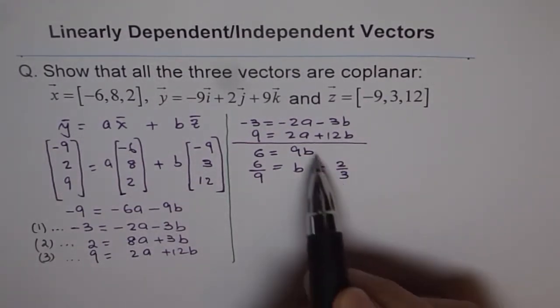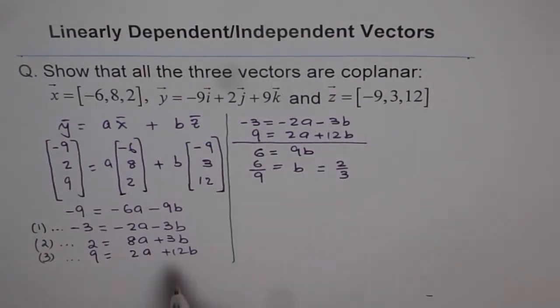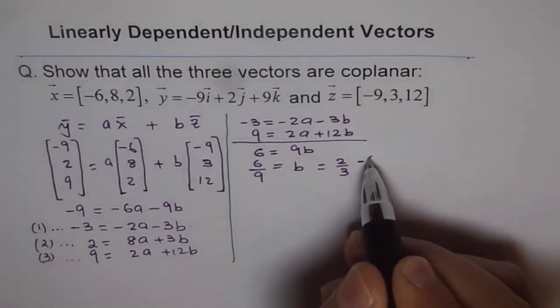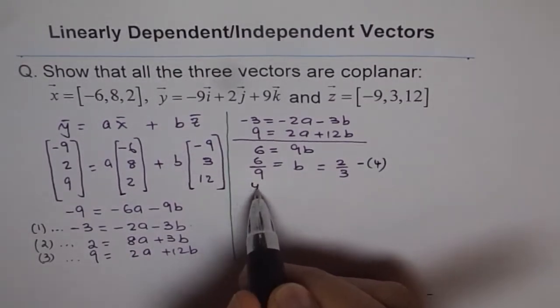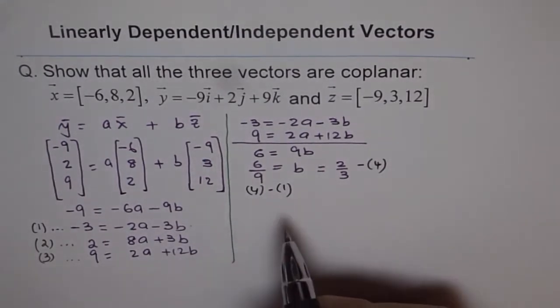So we can substitute this value in one of these equations for b and find what a is. So I prefer to use equation 1. It's simpler. So let's call this for the time being equation 4. So using equation 4 and equation 1, we can find the value of a.